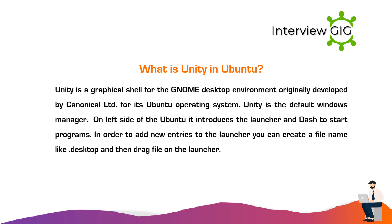What is Unity in Ubuntu? Unity is a graphical shell for the GNOME desktop environment, originally developed by Canonical Ltd for its Ubuntu operating system. Unity is the default Windows Manager. On the left side of Ubuntu it introduces the launcher and dash to start programs. To add new entries to the launcher you can create a file with a .desktop extension and then drag the file onto the launcher.